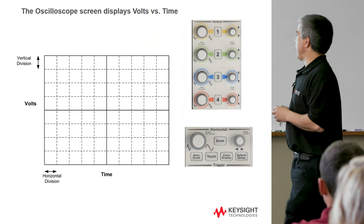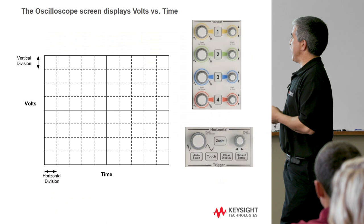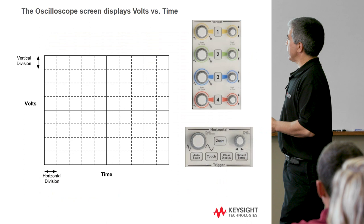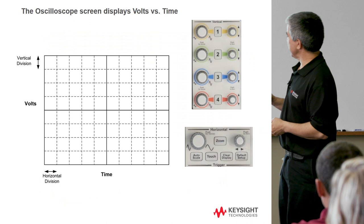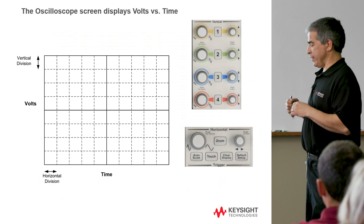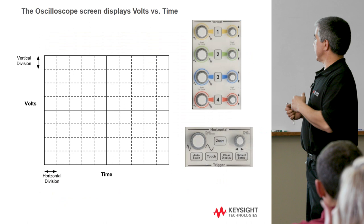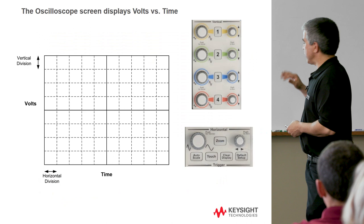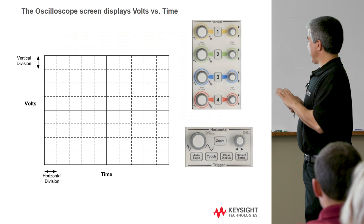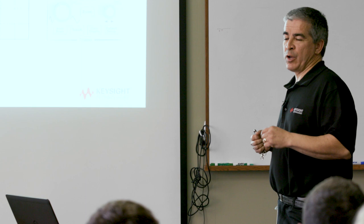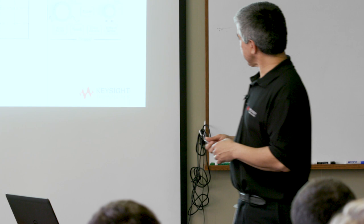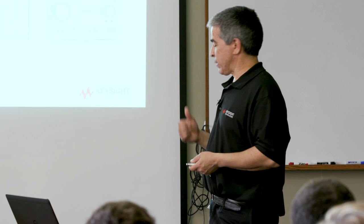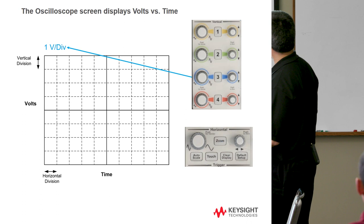For those who haven't used a scope or don't know how it works, we display volts versus time, and what you're presented with is a graticule. The graticule has volts on the vertical axis and time on the horizontal axis. Most of the hardware controls on the front of the scope give you the basic functionality in terms of an analog control to control things like the horizontal axis and the voltage axis. There's a lot of other functionality in the scope, but most of that is accessed through soft keys. Don't think for a minute that the functionality of the scope is limited to what you control with the hardware knobs.